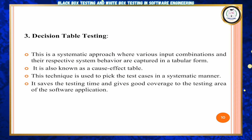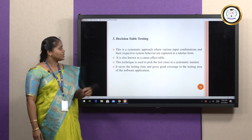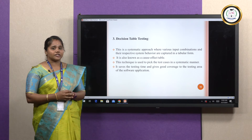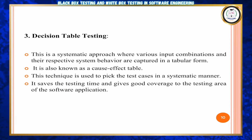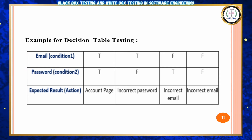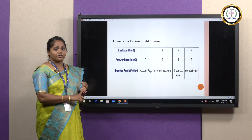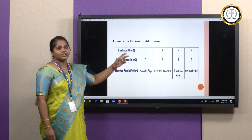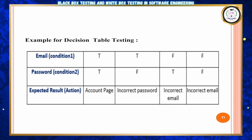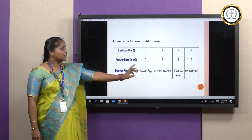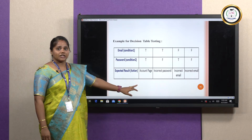Next, decision table testing. It is a systematic approach that gives combinations of inputs and the corresponding specified outputs. It is organized in a tabular column, also called a cause-effect table. For example, with email ID and password: correct email and correct password leads to the account page; correct email with wrong password gives an incorrect password error; wrong email with correct password gives an invalid email ID error; and wrong email with wrong password also gives an invalid email message.